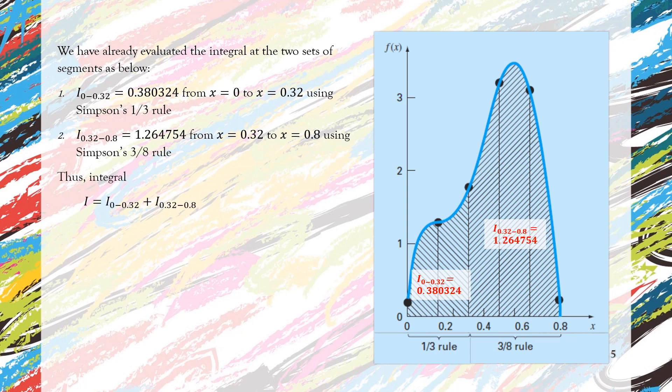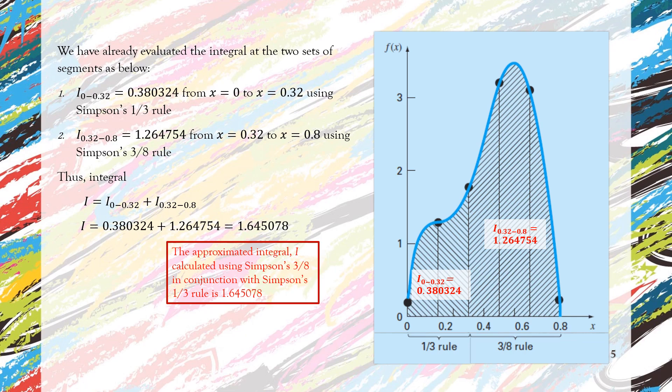And the second segment, 1.264754. So the total integral is simply the addition of these two integrals, which we will have 1.645078. So this is the approximated integral for this particular problem using the combination of Simpson's 3/8 rule and Simpson's 1/3 rule.